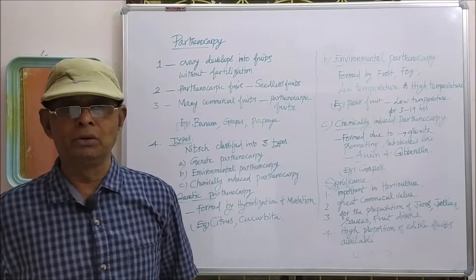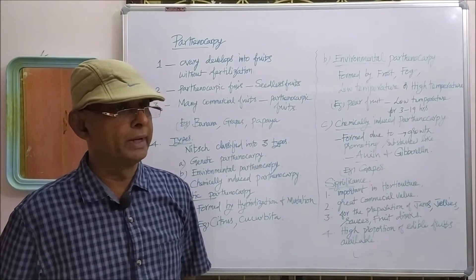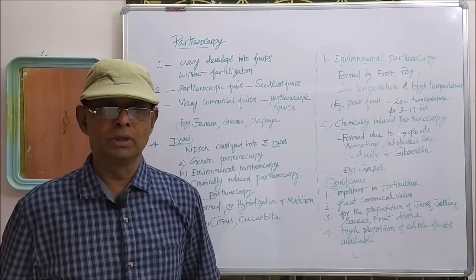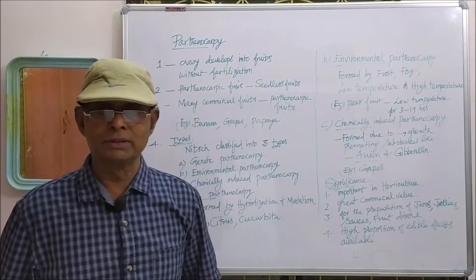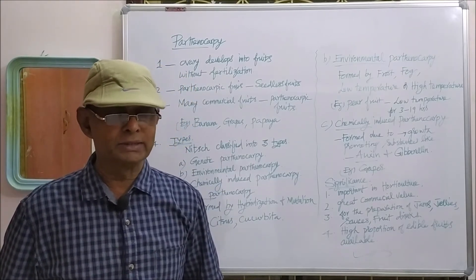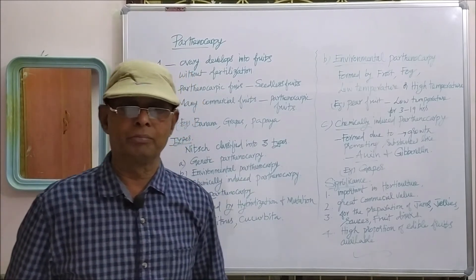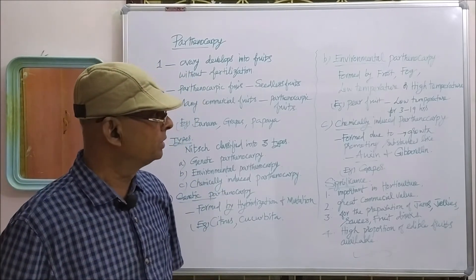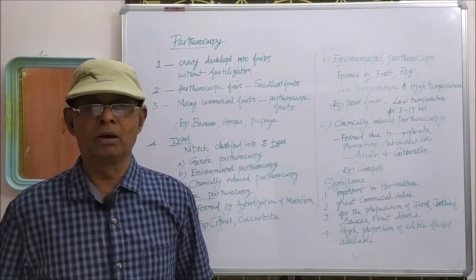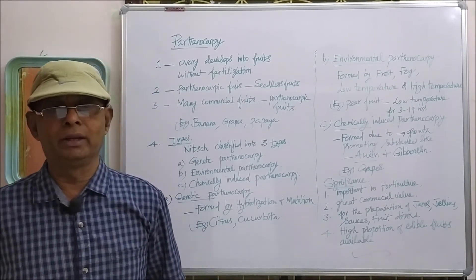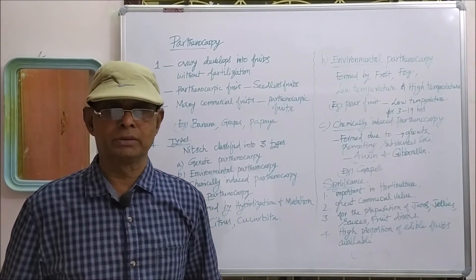The third type is chemically induced Parthenocarpy. Due to the application of certain chemicals — particularly growth promoting substances like auxin and gibberellin — that will induce Parthenocarpy. In grapes, due to the application of auxin, the seedless variety can be produced. That is chemically induced Parthenocarpy.